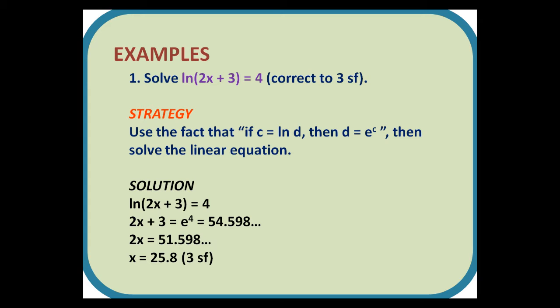Solution. ln(2x + 3) = 4, so 2x + 3 = e^4, which is 54.598. Taking away 3, we get 2x = 51.598, and dividing by 2, we get a value of x of 25.8, correct to three significant figures.